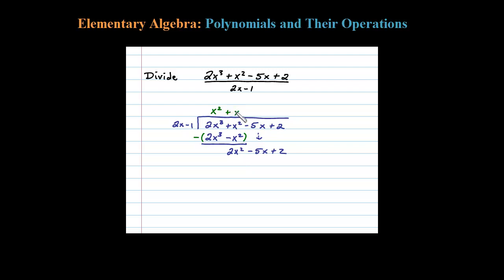In this case, it looks like I can use a plus x. x times 2x is 2x squared. And then don't forget, you have to distribute, so times the negative 1. x times negative 1 is minus x, after which you then subtract.